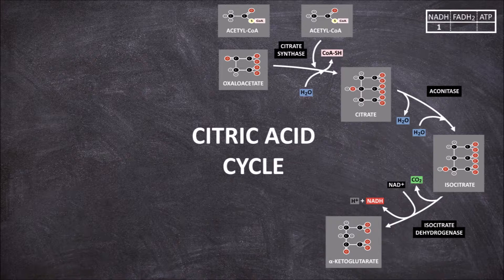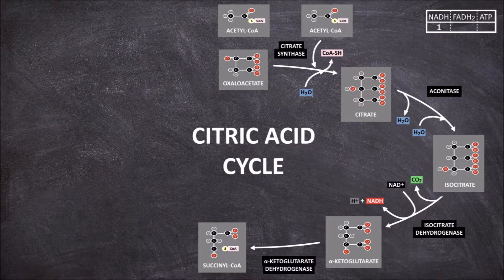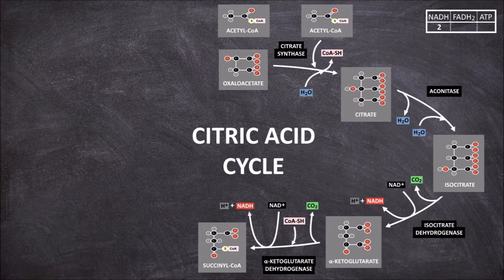The fourth step involves the conversion of alpha-ketoglutarate, a five-carbon molecule, into succinyl-CoA, a four-carbon molecule, using the enzyme alpha-ketoglutarate dehydrogenase. A carbon dioxide molecule is removed, a coenzyme A group is added, and NAD+ is reduced to NADH. This creates another NADH, taking our net total to two NADH per acetyl-CoA molecule.